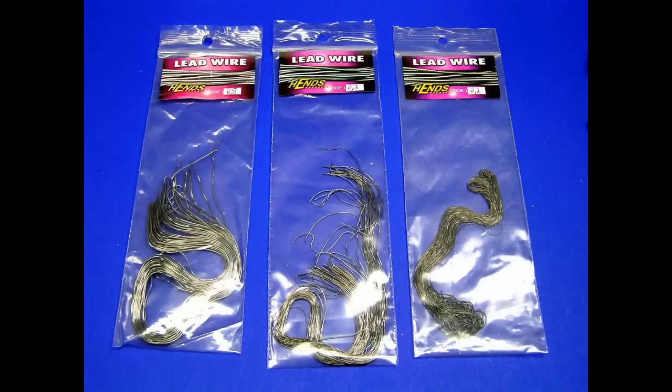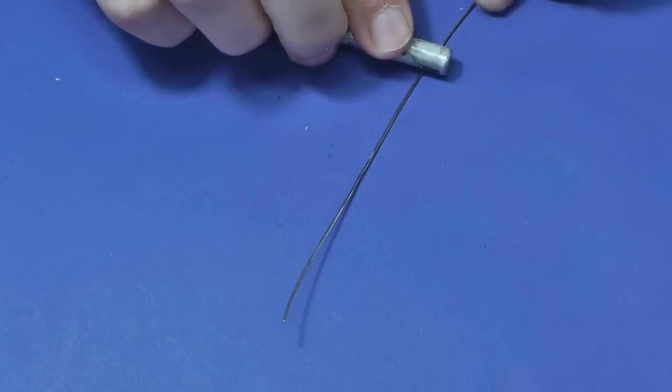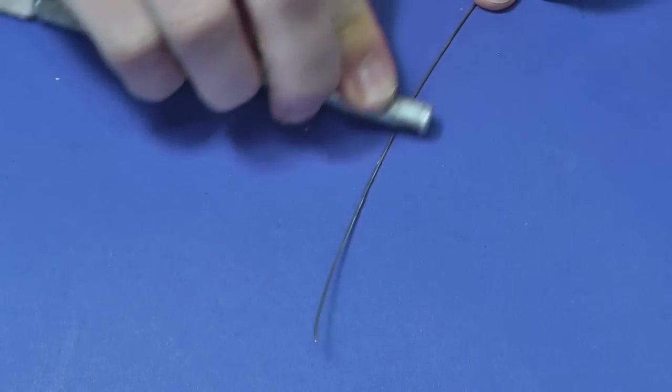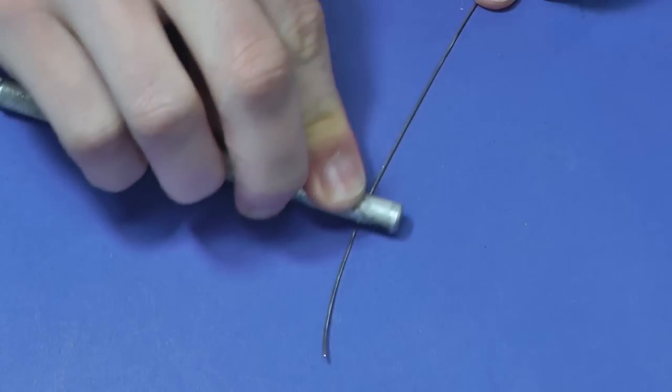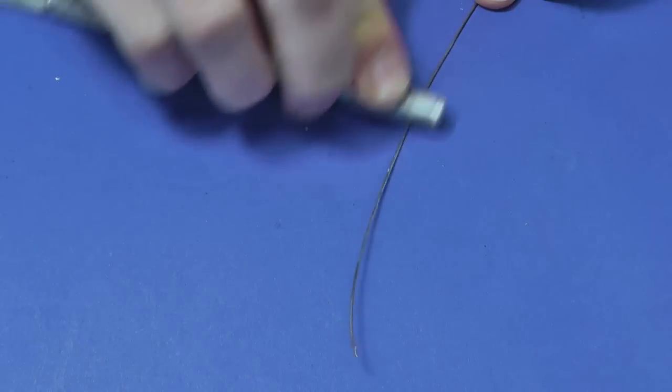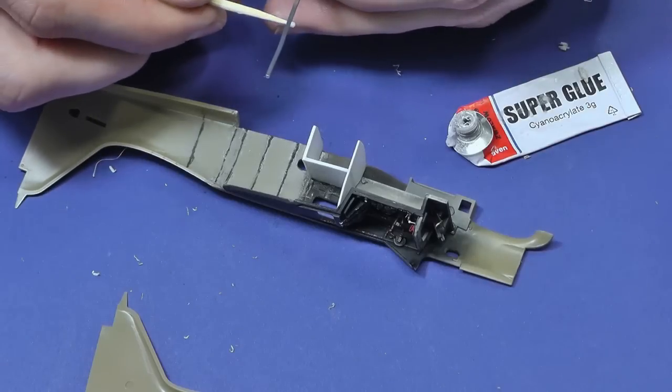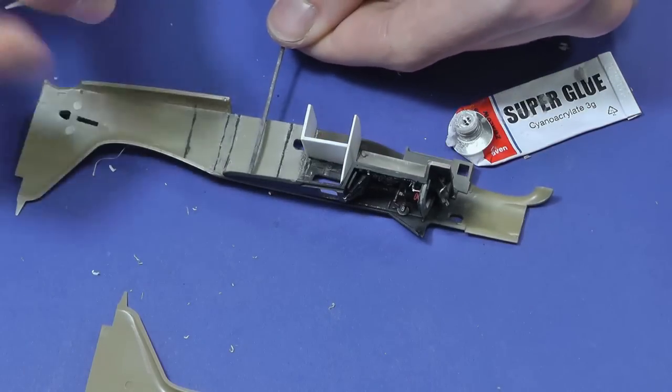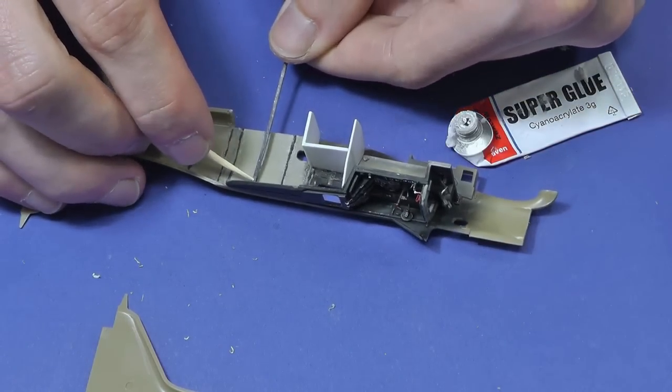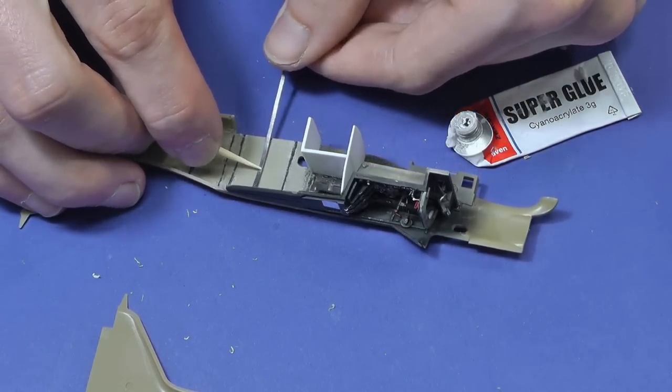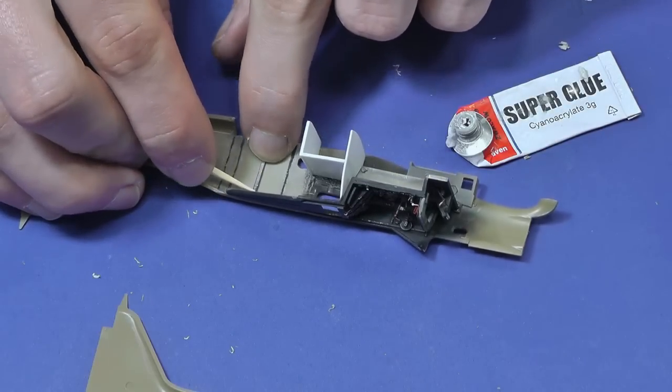Because I was not very successful with making ribs from plastic boards, I rather used two leaden wires which I flattened. I glue them with ordinary super glue. It is easy to work with leaden wires because lead is a quite soft material.